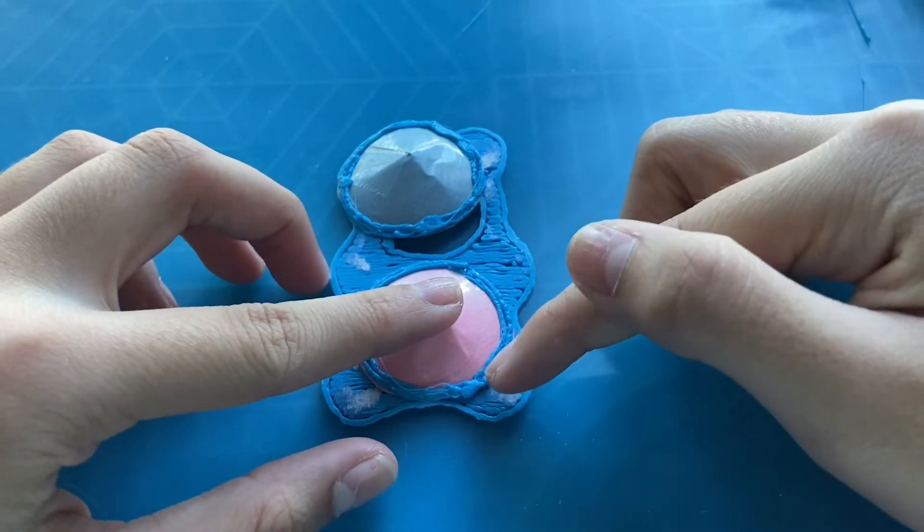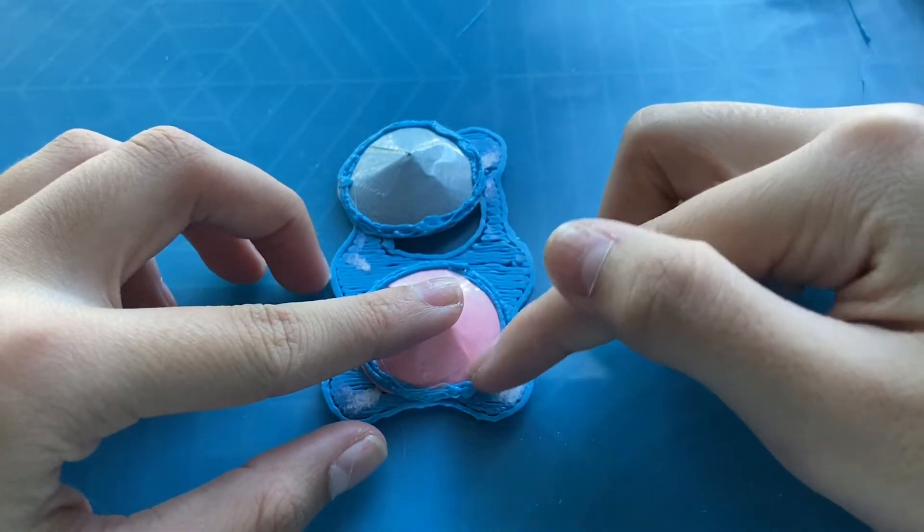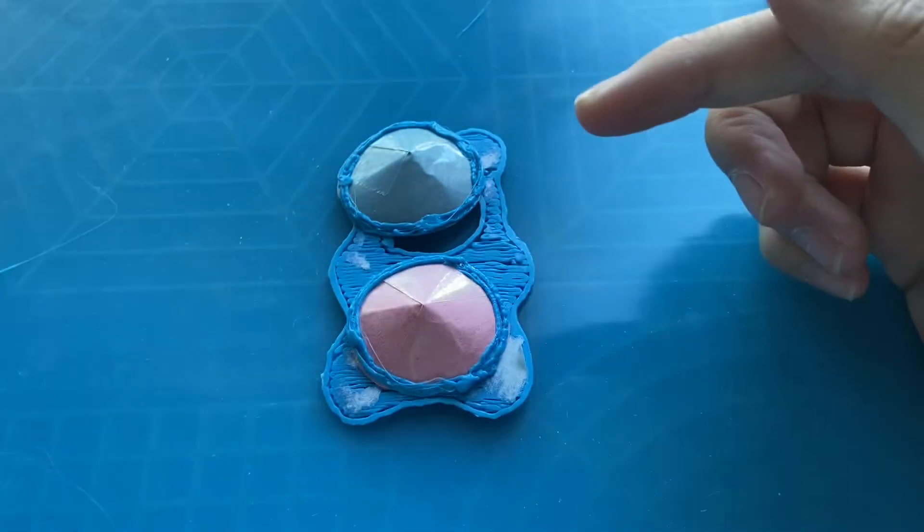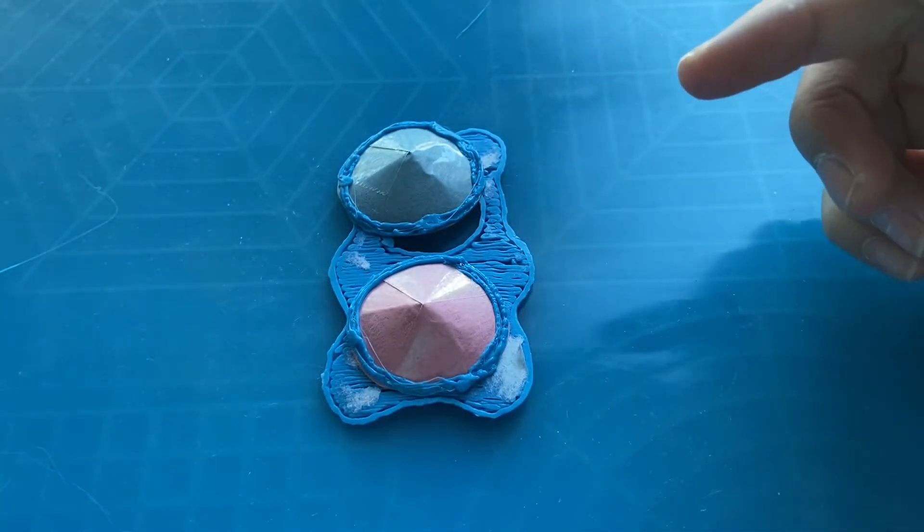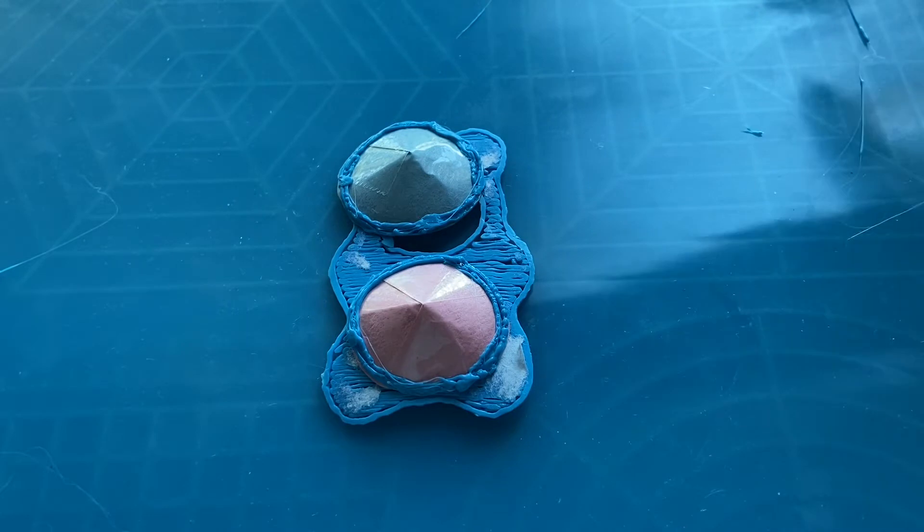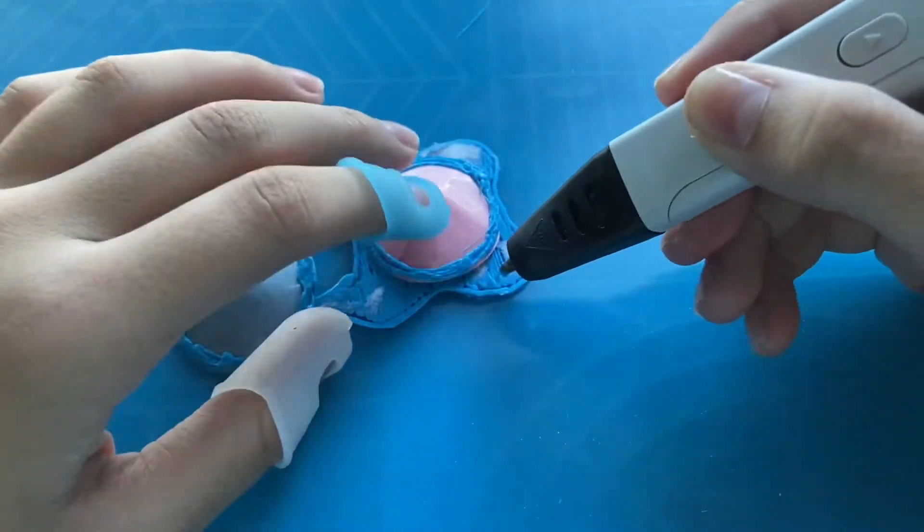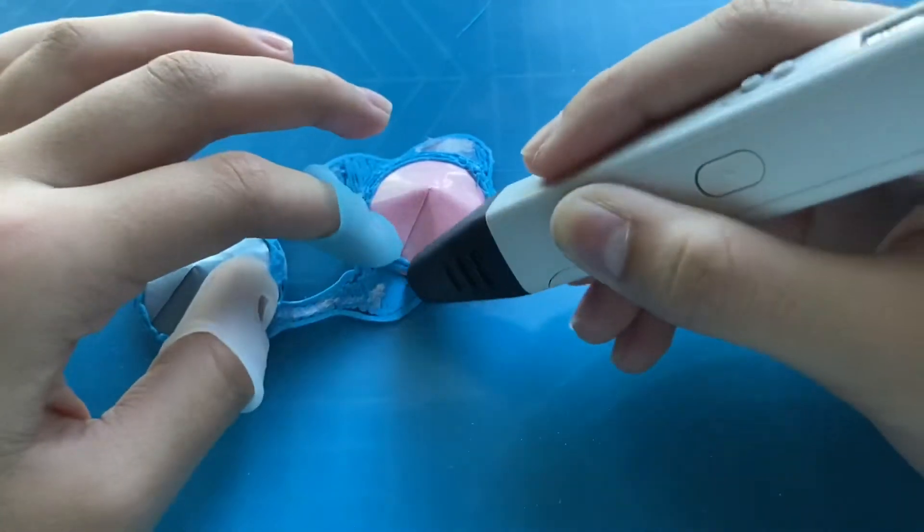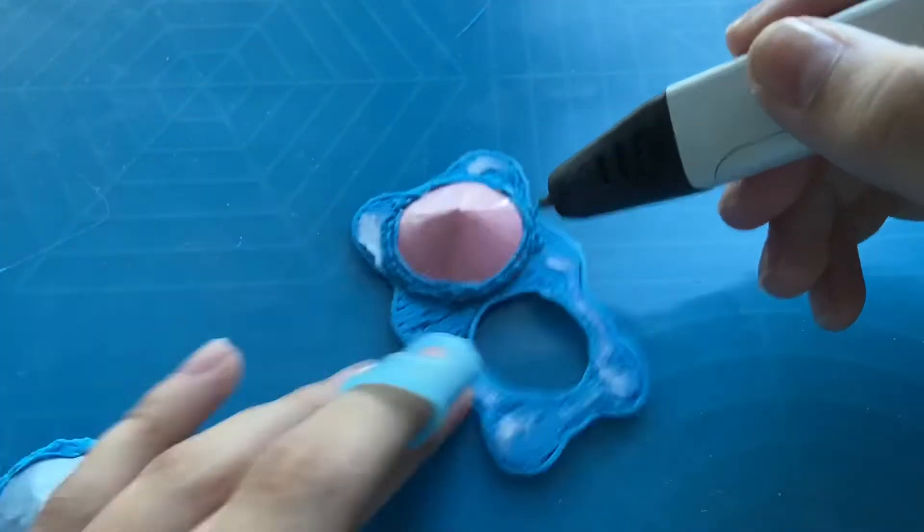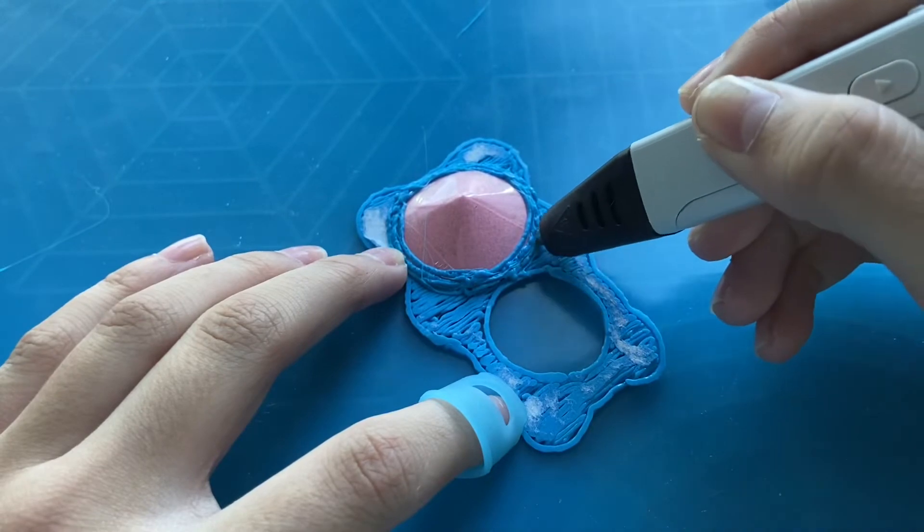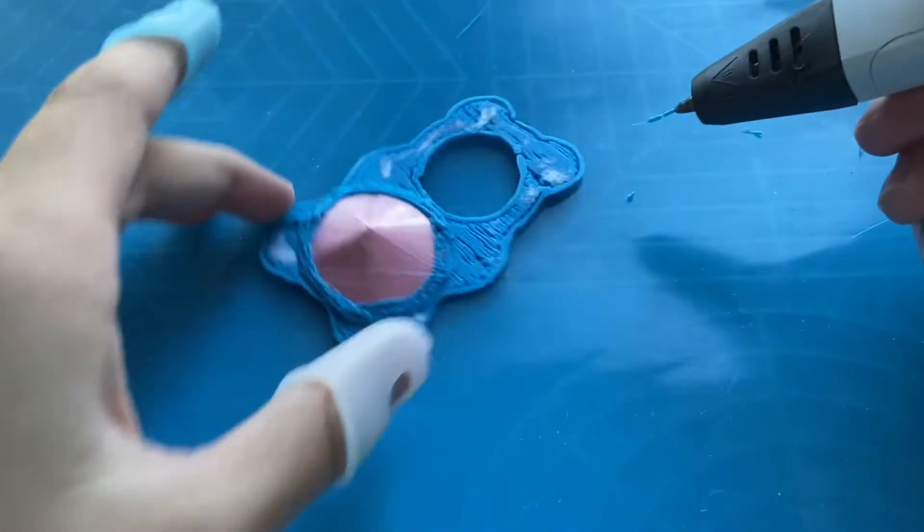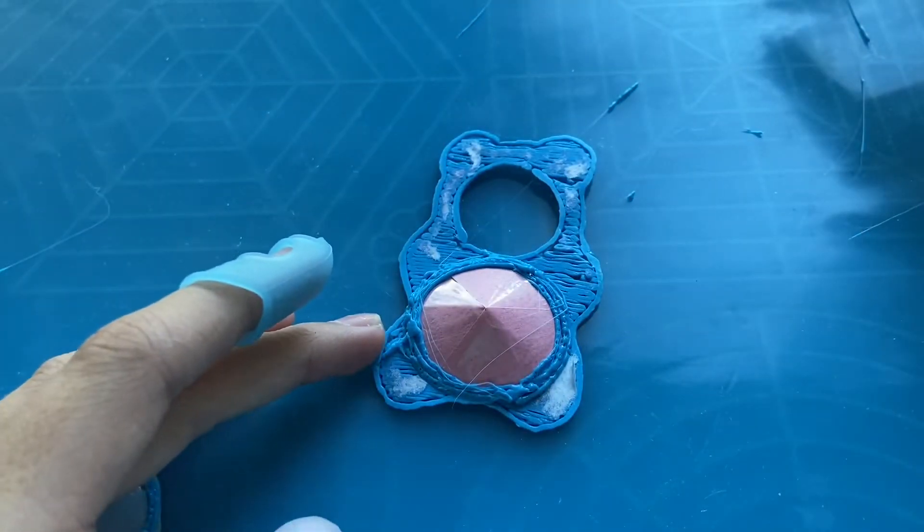So you're basically going to connect the outside of the pop to the base. So this is what it is going to look like. And just like that. We're going to do that with the other side now.